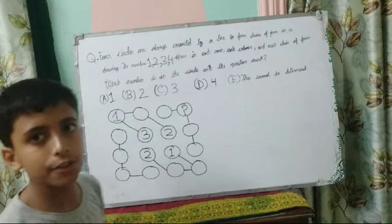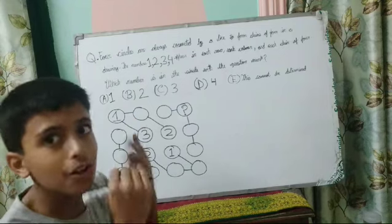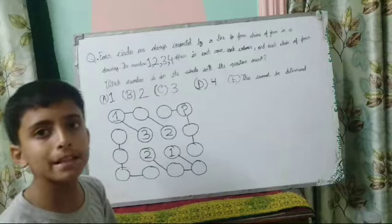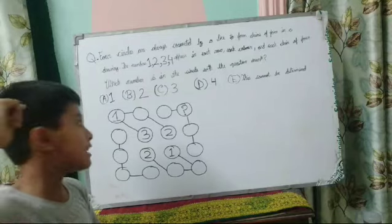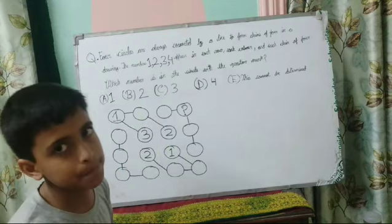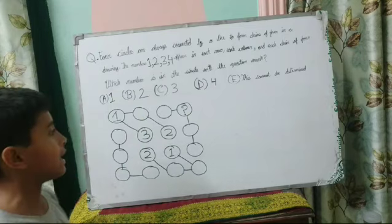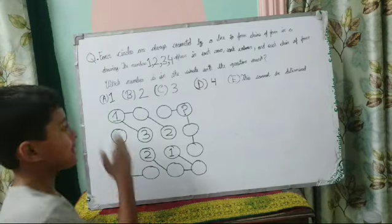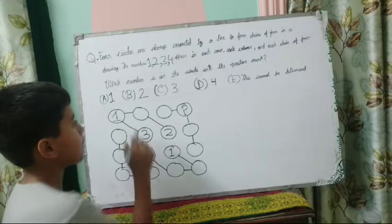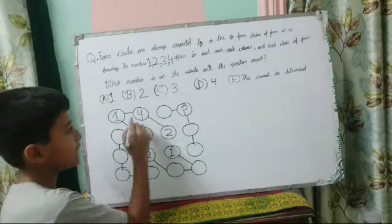Now we are going to use the strategy of definite and suspense. Definite means the number which is definitely going to come in that place only. Suspense means the number which is not confirmed — it can be in this place or that. Now after I have placed 1, 3, and 2 in this chain, the only number which is definite to come here is 4. So our whole chain is solved.